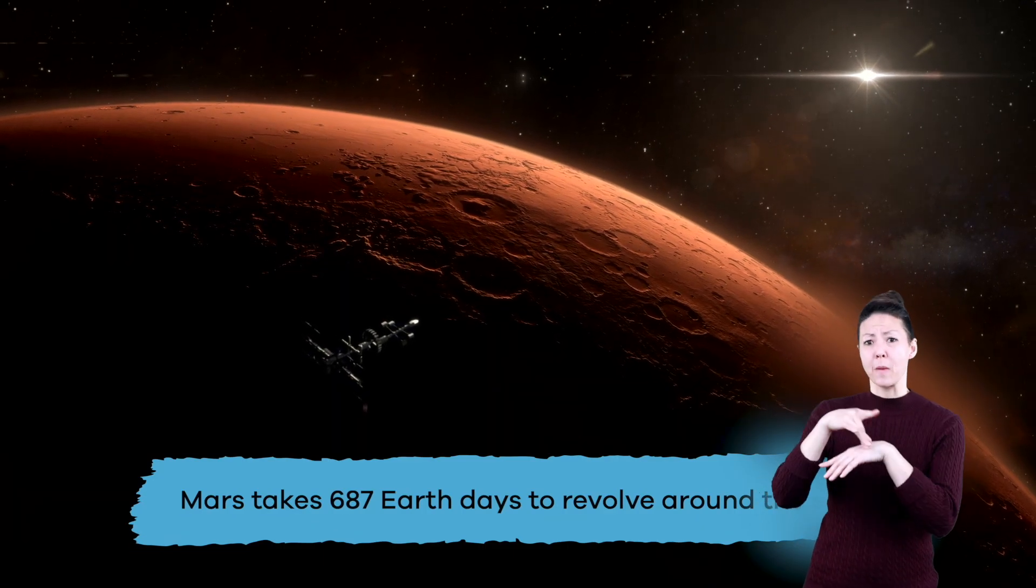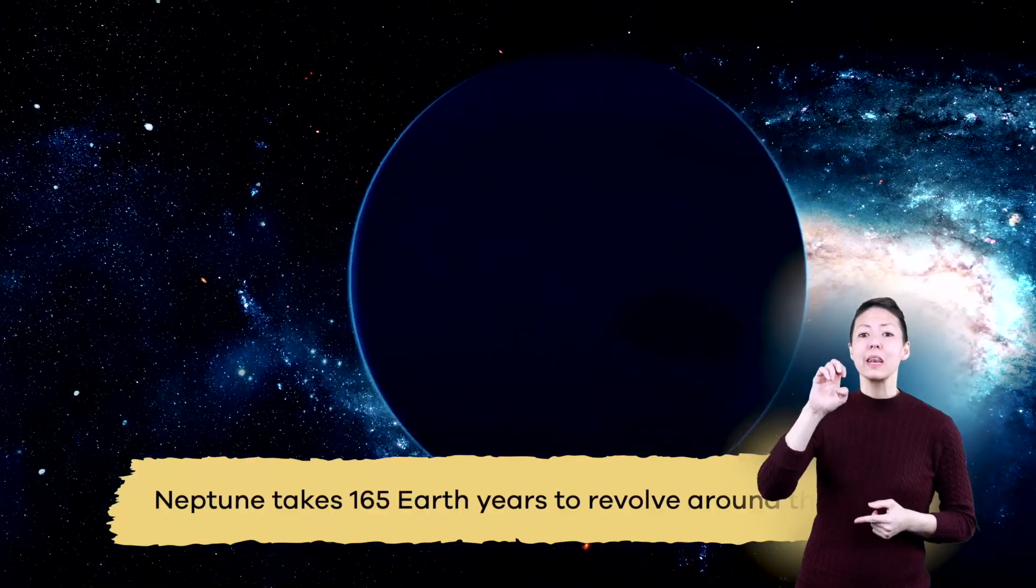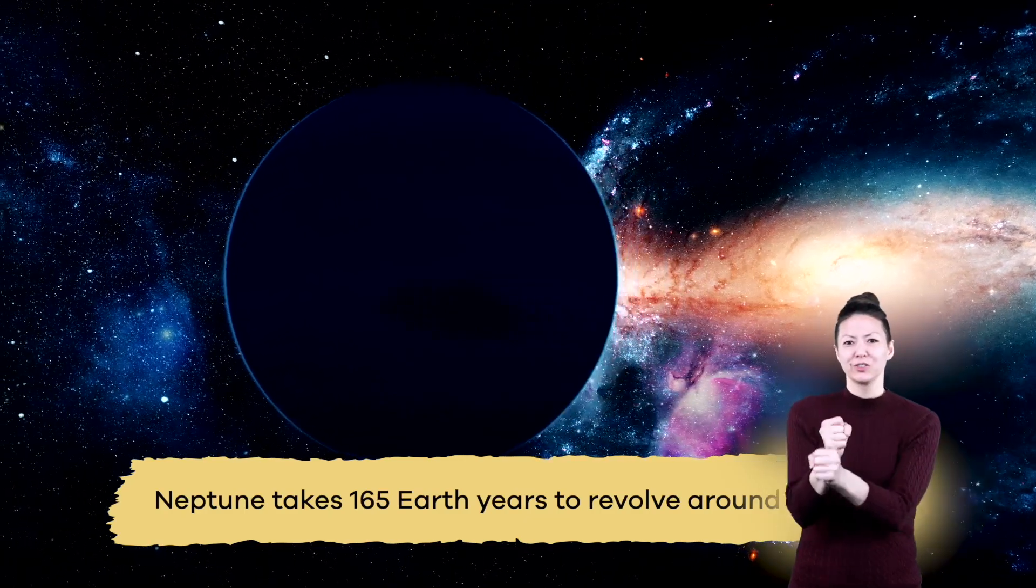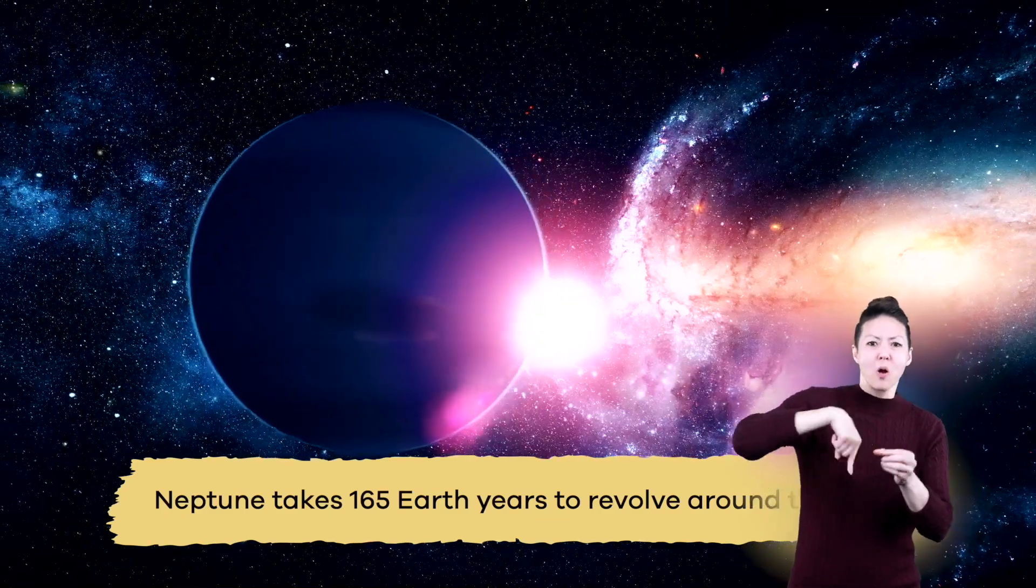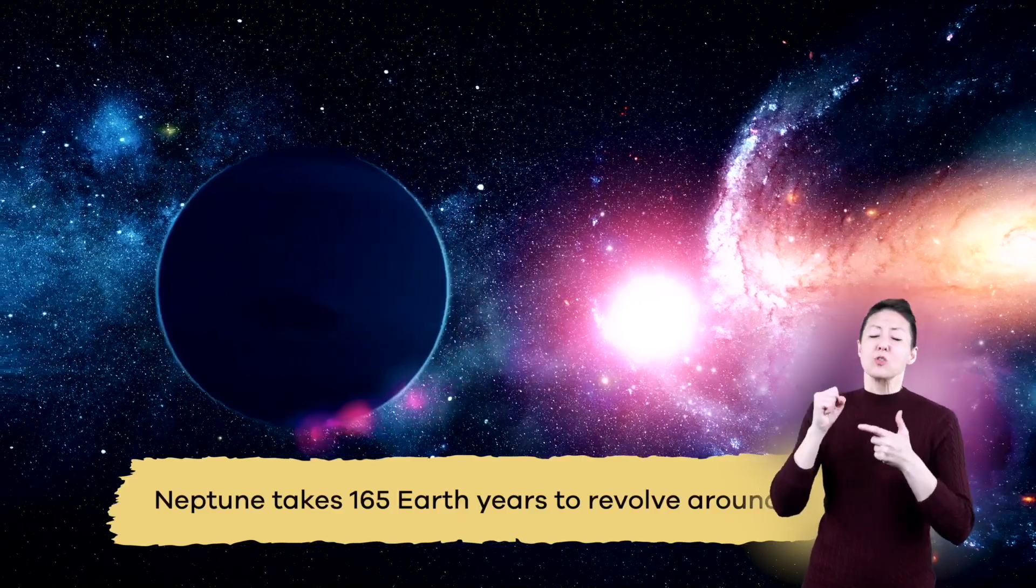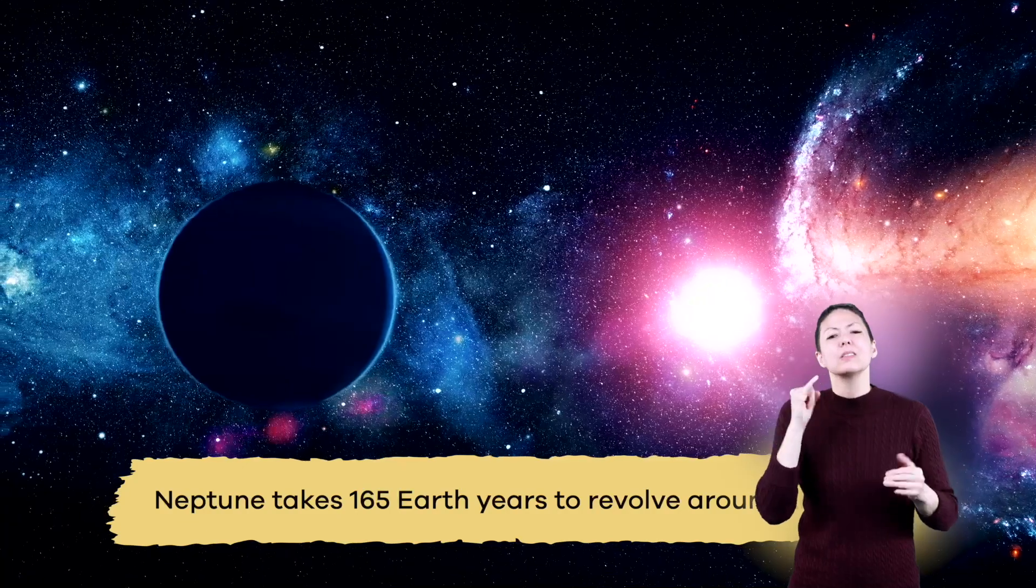On Mars, it takes almost twice that long. And on Neptune, it takes 165 Earth years for it to move around the sun once. But is Neptune just super slow? Or is there another reason it takes Neptune so long to orbit the sun?